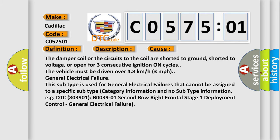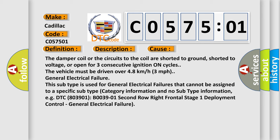This diagnostic error occurs most often in these cases: The damper coil or the circuits to the coil are shorted to ground, shorted to voltage, or open for three consecutive ignition on cycles. The vehicle must be driven over 4.8 km per hour.